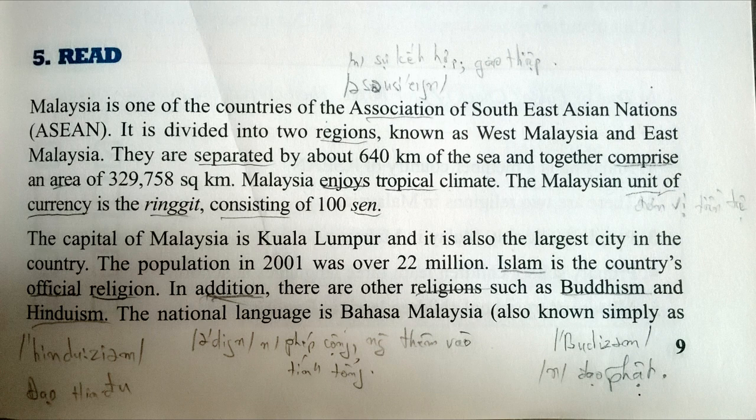Malaysia is one of the countries of the Association of Southeast Asian Nations, ASEAN. It is divided into two regions, known as West Malaysia and East Malaysia. They are separated by about 640 kilometers of the sea, and together comprise an area of 329,758 square kilometers.